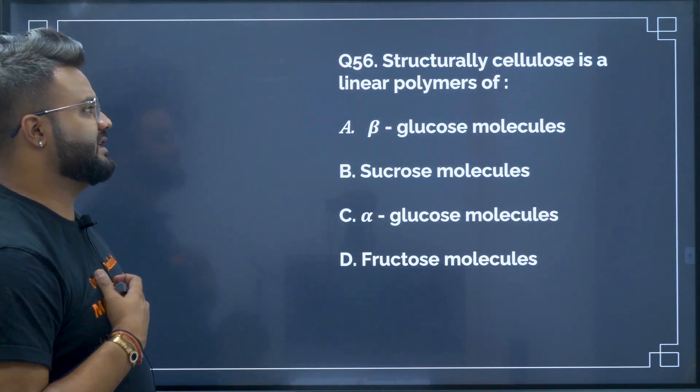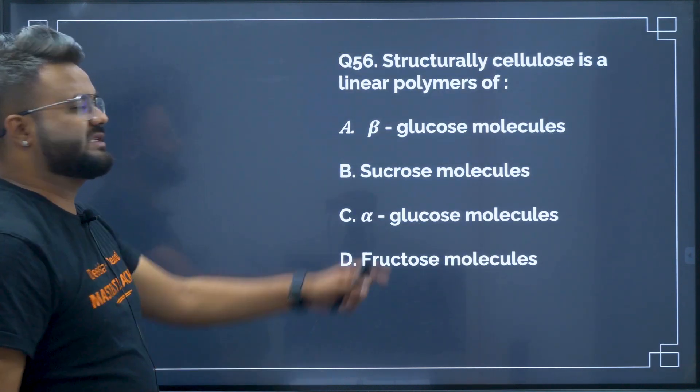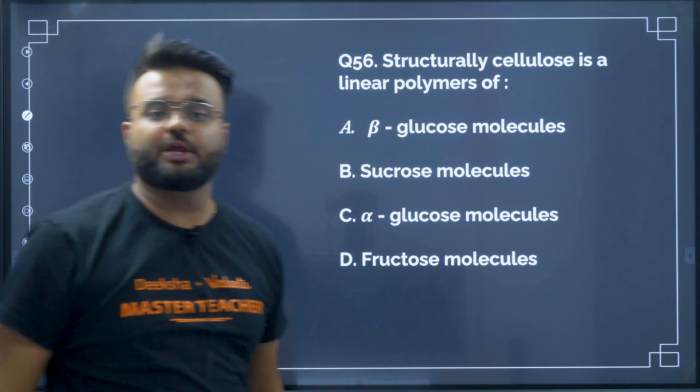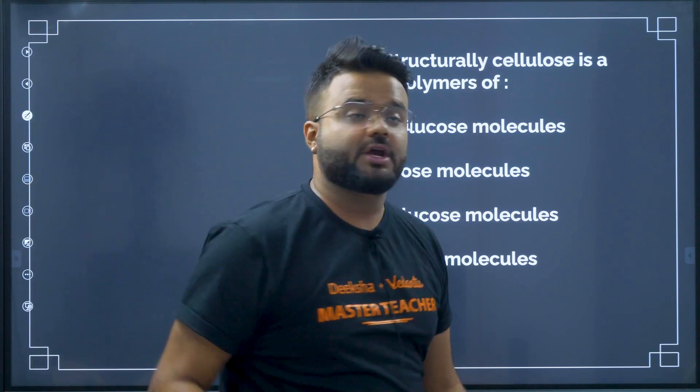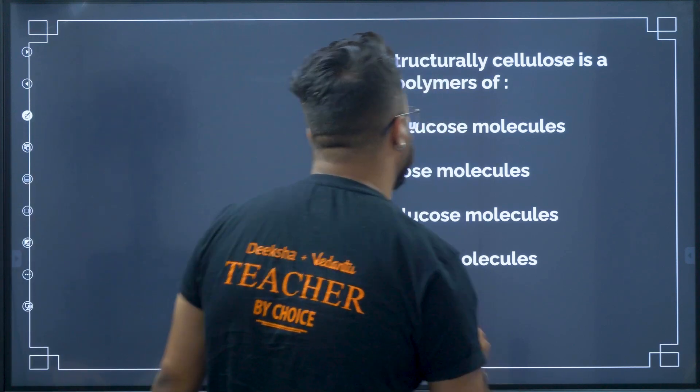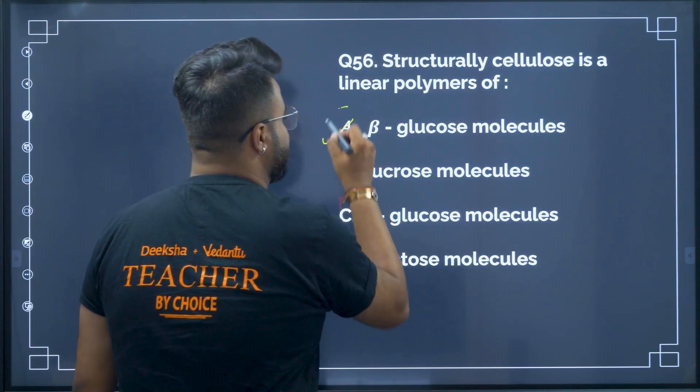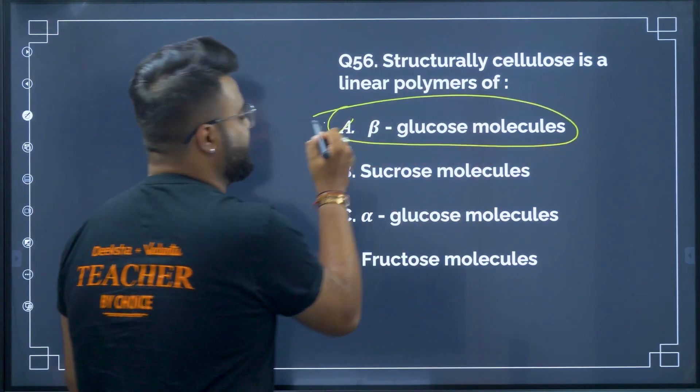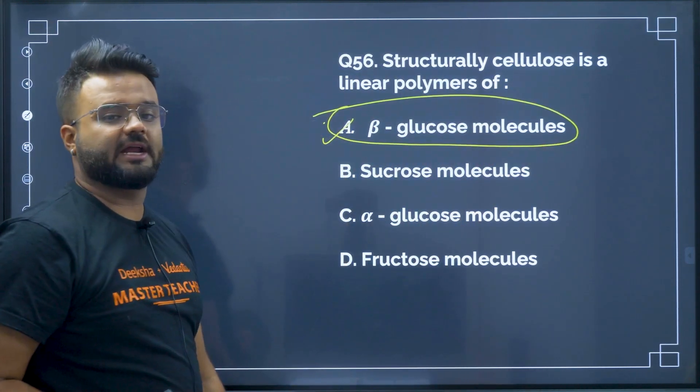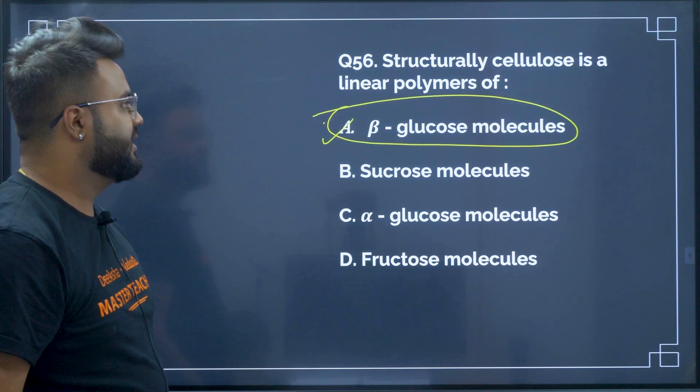Question number 56: structurally, cellulose is a linear polymer of beta-glucose molecules. Therefore option A will be your correct answer.